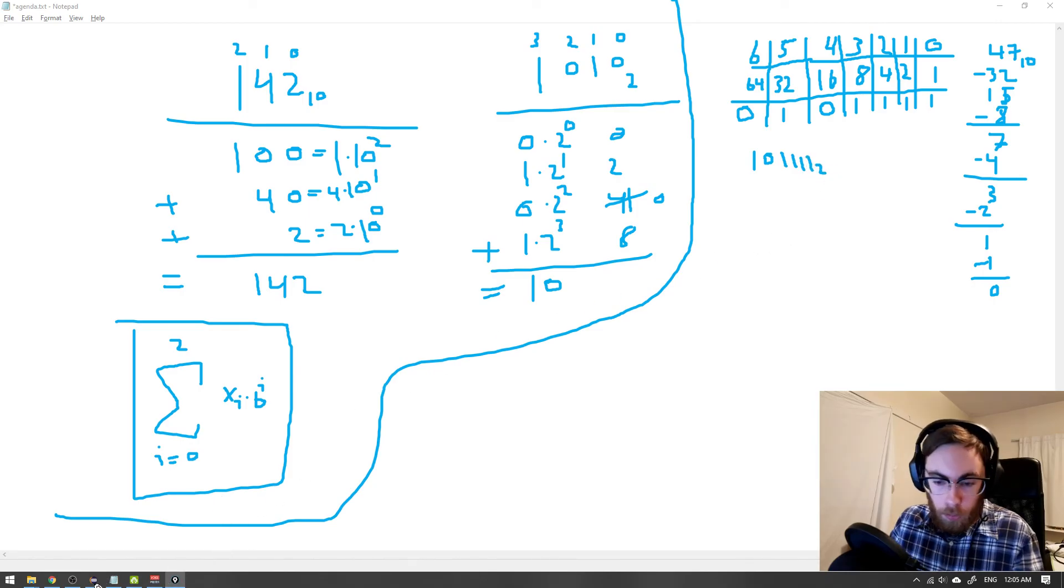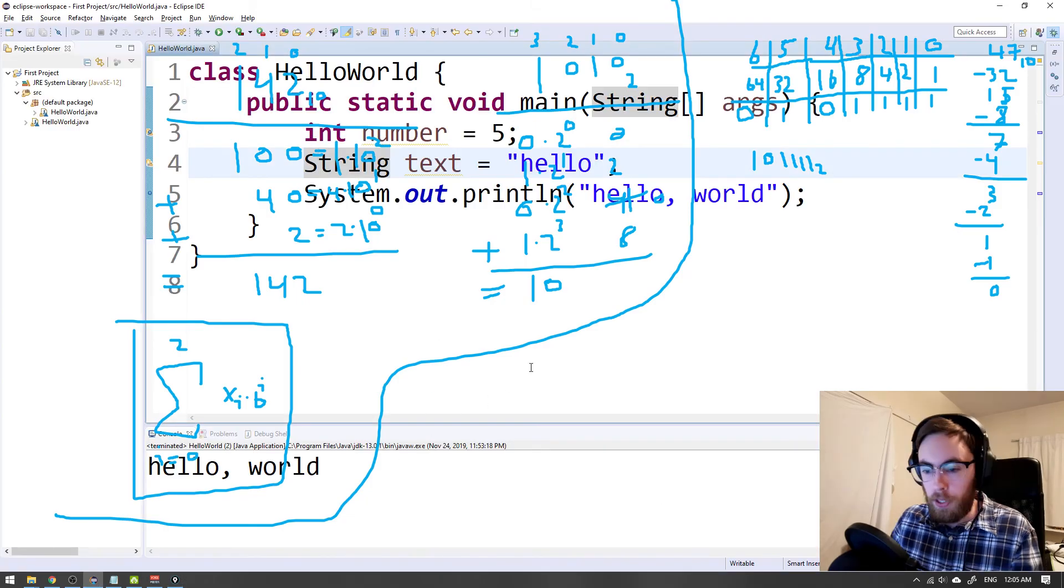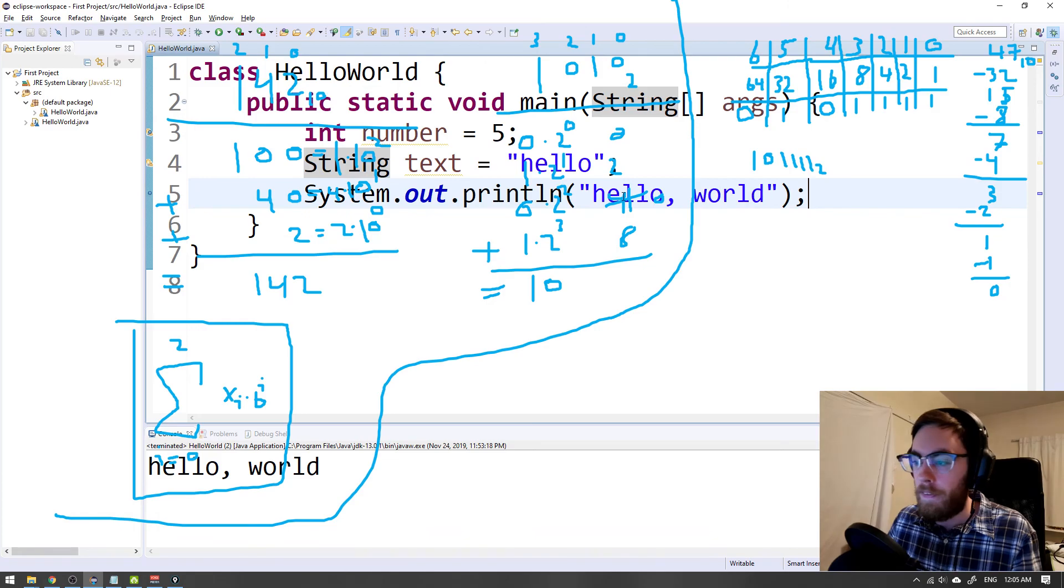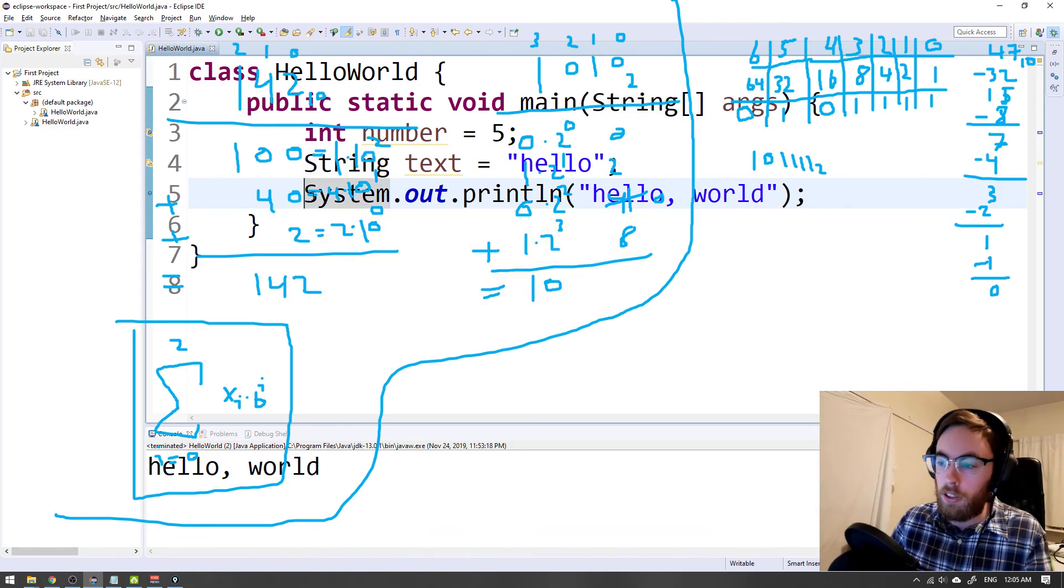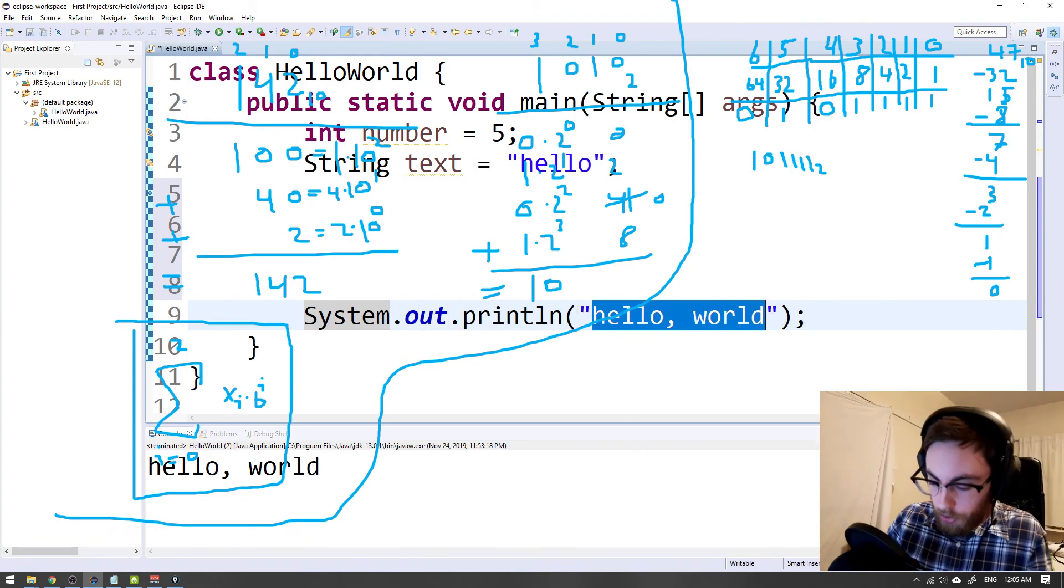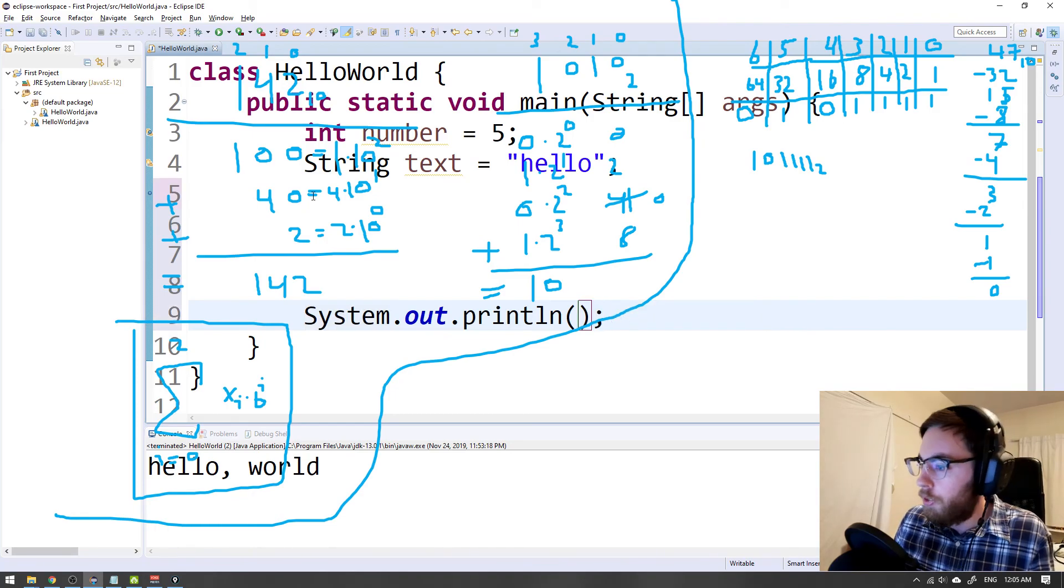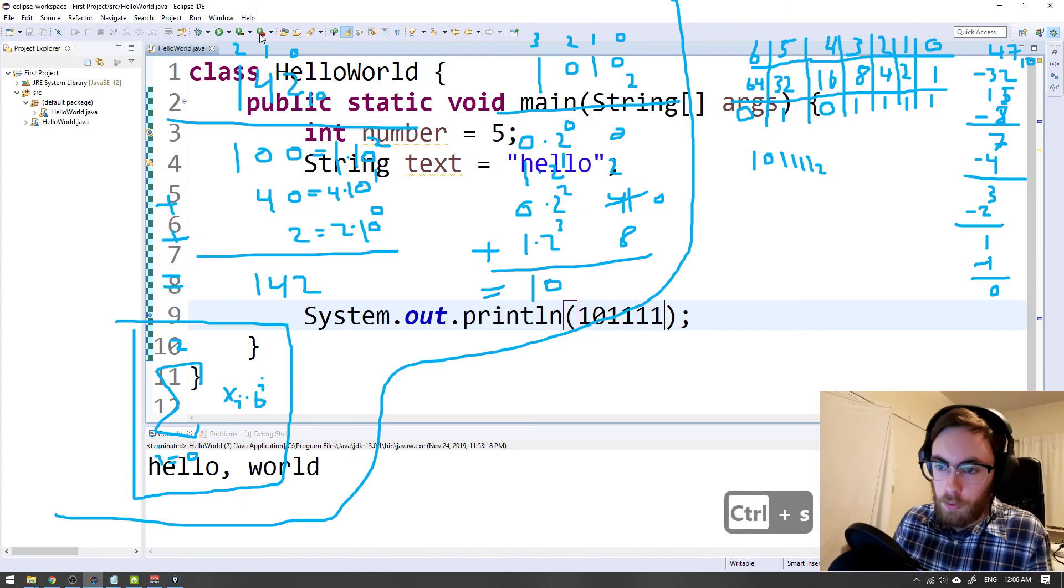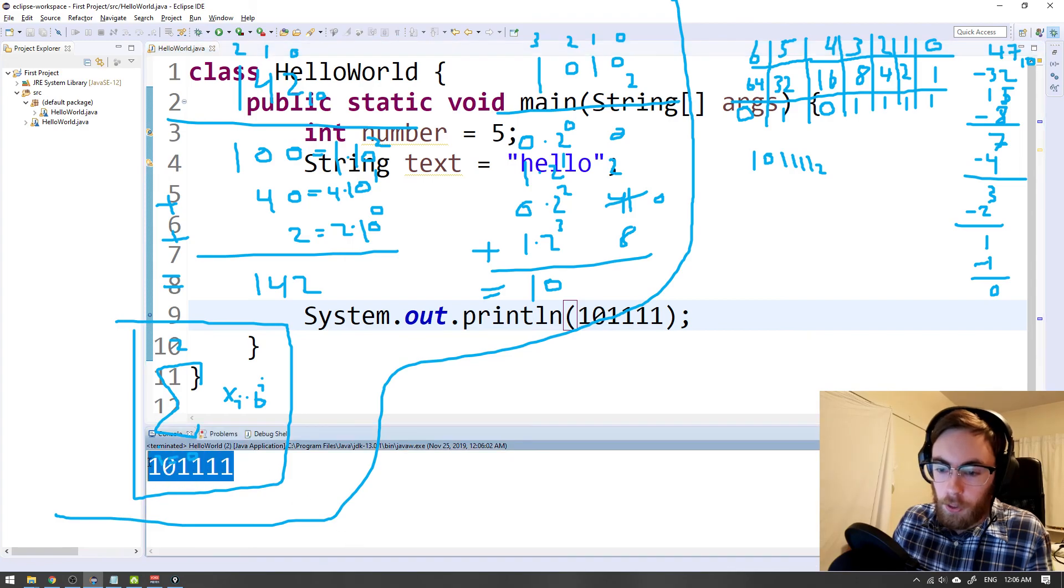So if we then were to plug this into Eclipse, let's just switch from the pen tool to this. And then what we can do to check values is to write it here. We just write, let's get rid of those quotes. We write 101111. And then we try to print this out. And if we just hit play, it will just print it out as the decimal value. But that's not what we want to do.